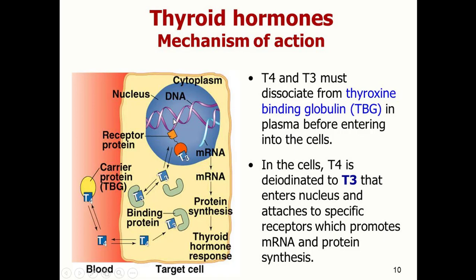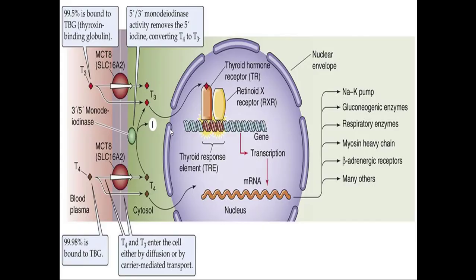Inside the nucleus, T3 binds to a receptor protein. This T3-receptor complex associates with the retinoid X receptor near the DNA, in the region known as the thyroid response element (TRE). Once the thyroid hormone binds to its receptor, it causes gene transcription, producing messenger RNAs that move out and perform different functions: enhancing formation of the sodium-potassium pump, gluconeogenic enzymes, respiratory enzymes, myosin heavy chains, beta-adrenergic receptors, and many other things.